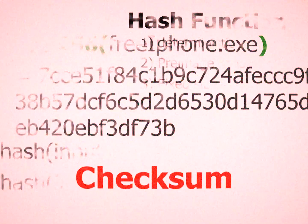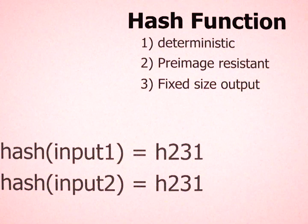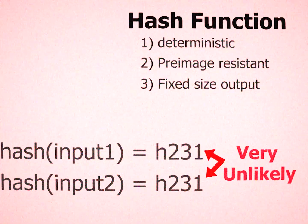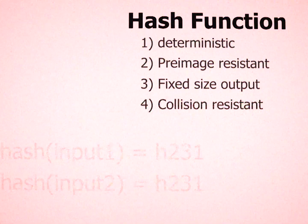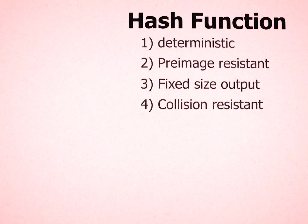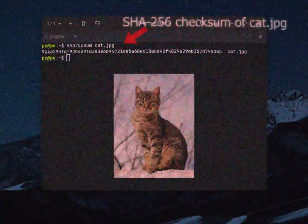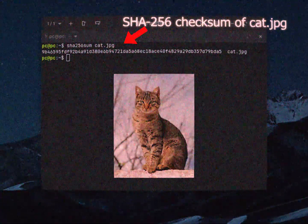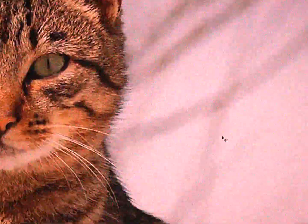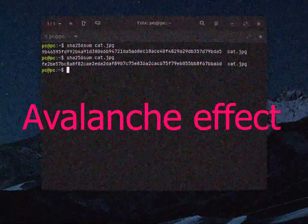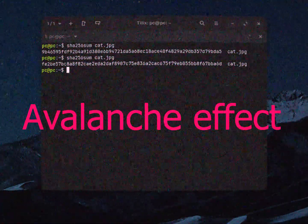To make this more reliable, it should be infeasible to find two inputs that will produce the same hash — this is known as collision resistance. The last attribute a hashing function should have is this: check the hash of this image file. I am going to change one pixel of this image to a slightly different color, but our hash changes entirely, unpredictably.